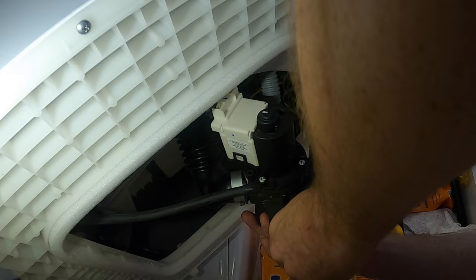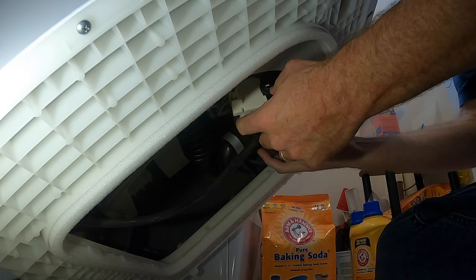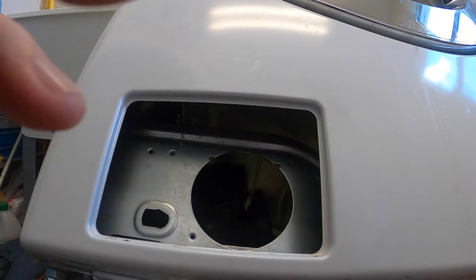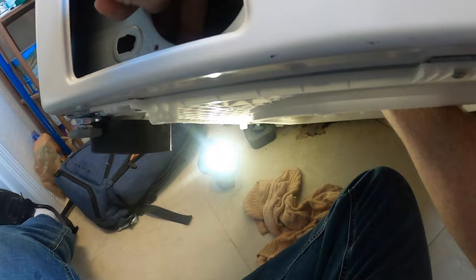After securing the pump to the pump housing, reconnect the wire harness. When repositioning the drain pump, you have to feed the drain hose for the coin catch through the little hole. It helps to use two hands—one from underneath and one from the front, pulling the drain hose through.